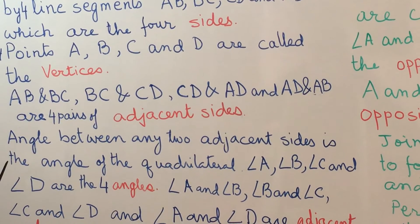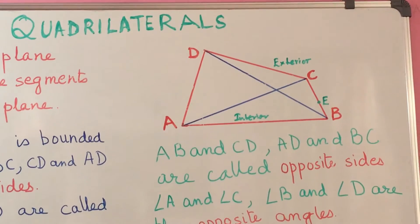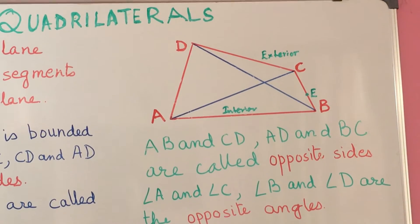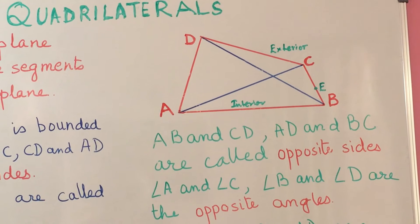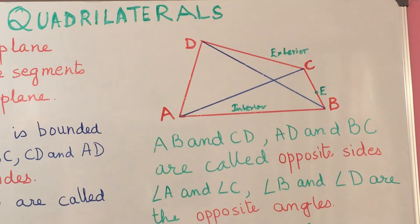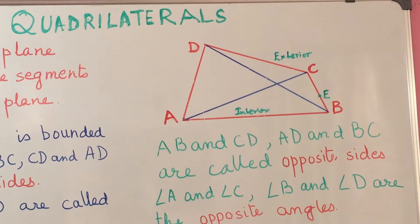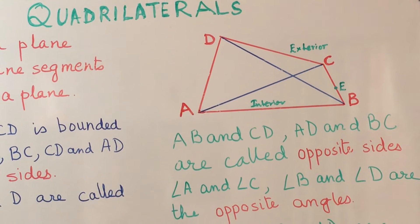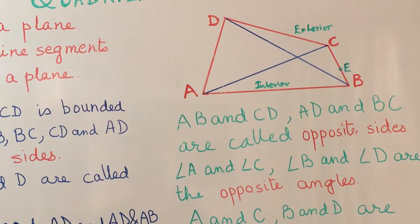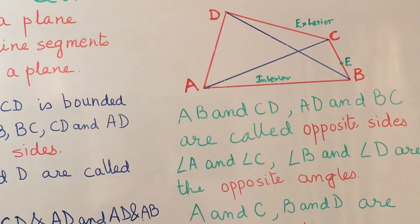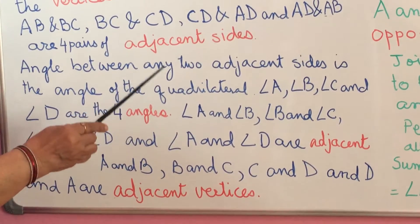Now the angle between any two adjacent sides is called an angle of the quadrilateral. Angle A is between sides AB and AD. Angle B is between sides AB and BC. Angle C is formed by sides BC and CD. And angle D is formed by the adjacent sides CD and AD. So we have four angles in a quadrilateral: angle A, B, C, and D.